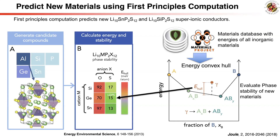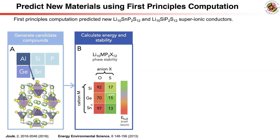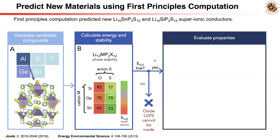The oxides with the same structure have a high energy above hull of 90 meV per atom, suggesting a strong decomposition reaction and poor phase stability of oxides in the LGPS structure. For predicted materials with poor phase stability, such as these hypothetical oxides, we can exclude them from further evaluation because they are unlikely to be synthesizable in the lab.